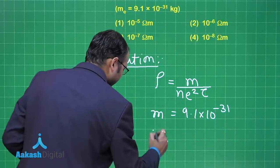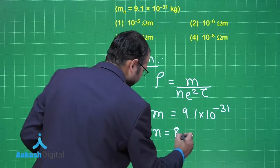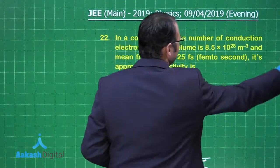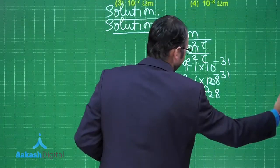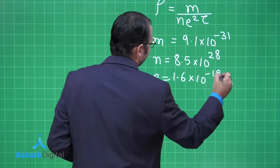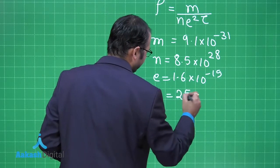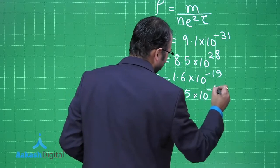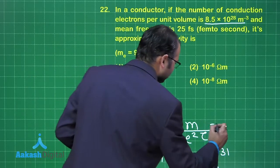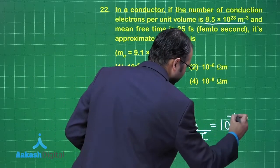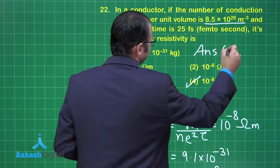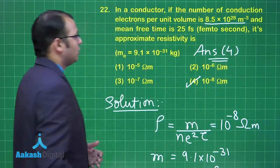n is given as 8.5×10²⁸ per meter cube, e is 1.6×10⁻¹⁹, and τ is 25 femtoseconds, that is 25×10⁻¹⁵ seconds. Substituting all the values, you will get the answer nearly equal to 10⁻⁸ ohm meters. So option number 4 is the right answer to this question.